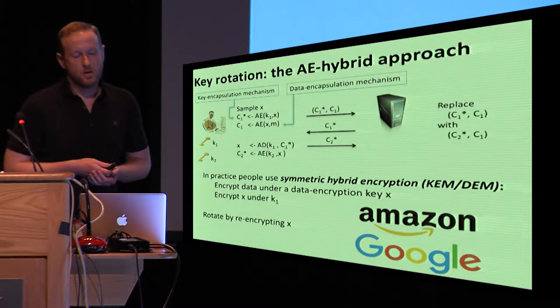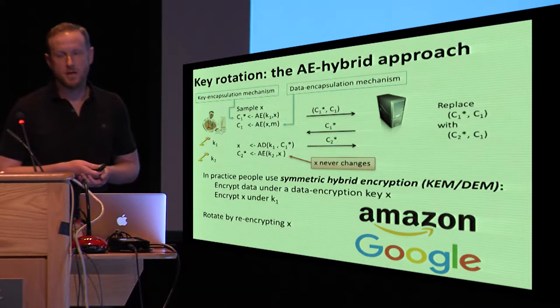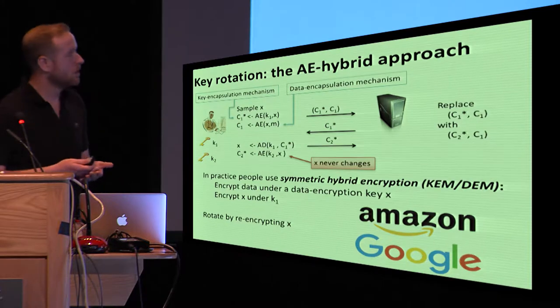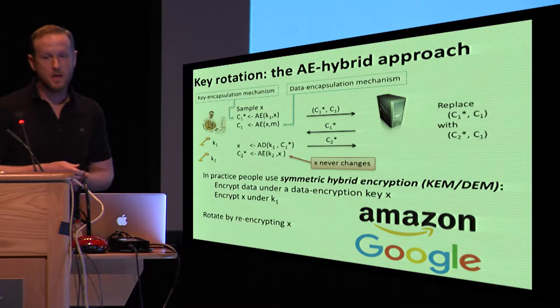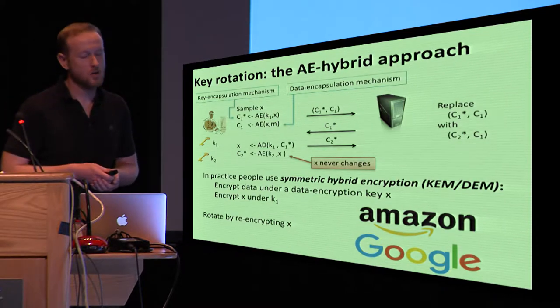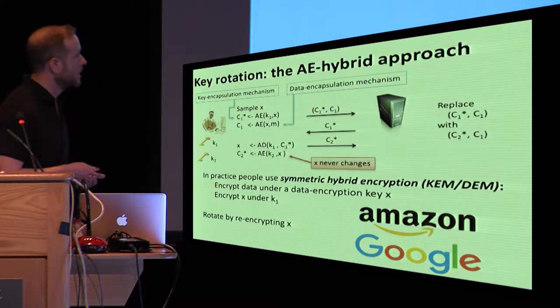This is indeed what's being offered right now by these APIs I mentioned earlier. But it's ultimately a little bit unsatisfying. In particular, the data encryption key X never changes. When I first started thinking about this problem, it was actually because an Amazon engineer came and said, hey, it's a little bit weird that we have these key rotations that aren't actually rotating all of the secrets underlying the ciphertext.